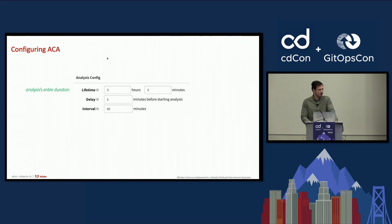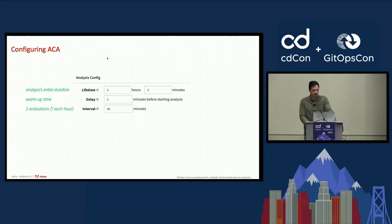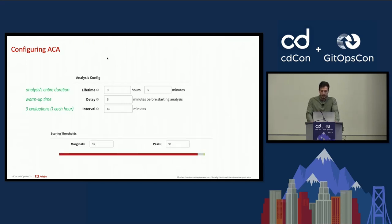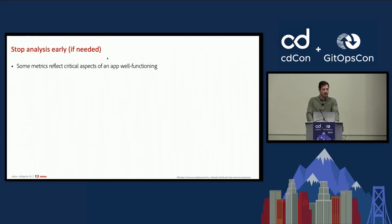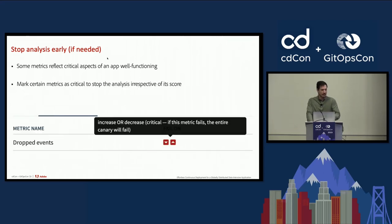We configure the canary analysis to run for three hours to catch all kinds of behaviors and ensure there is no latent issue. It's important to let the application warm up so metrics can stabilize before analysis begins. We do an evaluation each hour to spot problems early and stop the analysis without waiting the full three hours, giving us three evaluations in total, each yielding a score. The final evaluation needs a score of at least 99 to pass, while intermediary ones need at least 95. Some metrics may have a severe impact, so they can be marked as critical — the analysis will be stopped irrespective of score if a difference is detected for them.